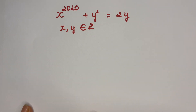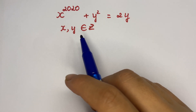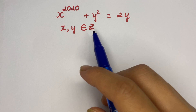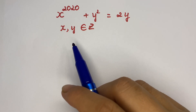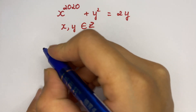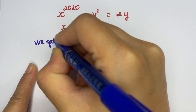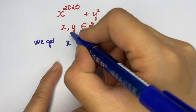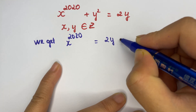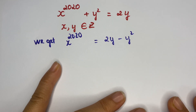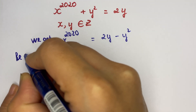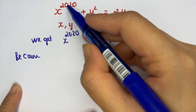Hello everyone. How to find x and y from the equation? In this case, x and y are integer numbers. First, you need to move the y squared term to the other side, so we get x to the power 2020 equals 2y minus y squared.